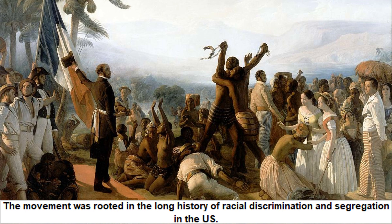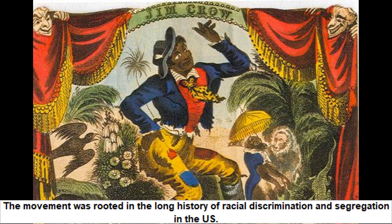The roots of the Civil Rights Movement can be traced back to the long history of slavery, racial discrimination, and segregation in the United States. After the Civil War and the abolition of slavery, African Americans continued to face severe discrimination, particularly in the South, where Jim Crow laws enforced racial segregation in public places and disenfranchised black voters.